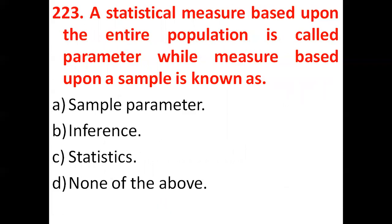The next question: a statistical measure based upon the entire population is called a parameter. But a statistical measure based upon a sample is called statistics — not 'sample parameter.' Remember: entire population = parameter; sample = statistics. So the correct answer is option C.